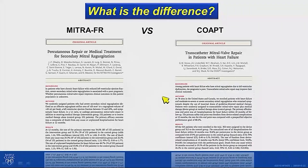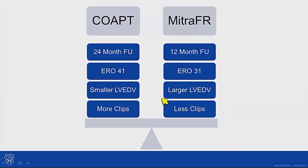Before the COAPT trial publication, a European trial called MITRA-FR came out saying it doesn't work. We want to highlight why these two trials differed. Most importantly, MITRA-FR was only followed for 12 months — and as we saw in COAPT, at 12 months there wasn't much improvement beyond decreased hospitalizations; the mortality benefit was a later finding from that change in disease trajectory.